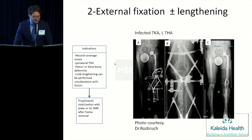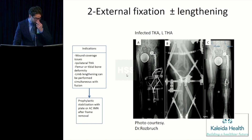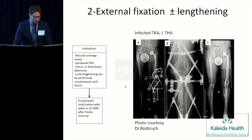Another patient illustrates the same strategy: this patient had an ipsilateral THA, making a frame a good option. You can always do prophylactic secondary stabilization with a nail or plate; in this case, a plate was reasonable.